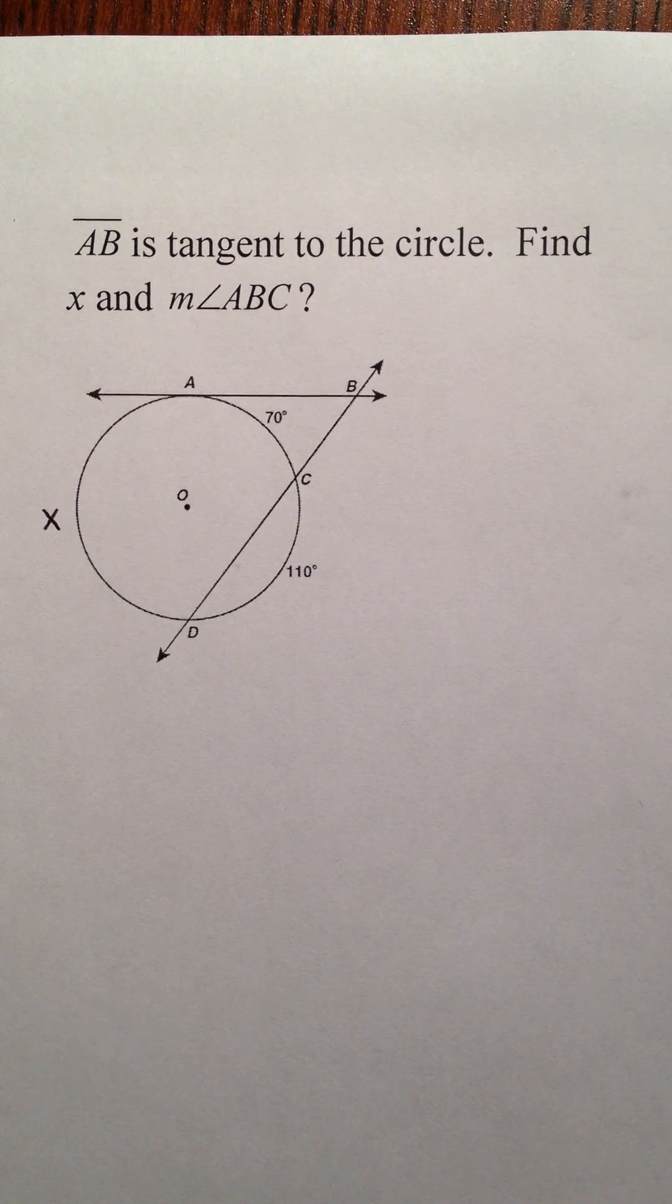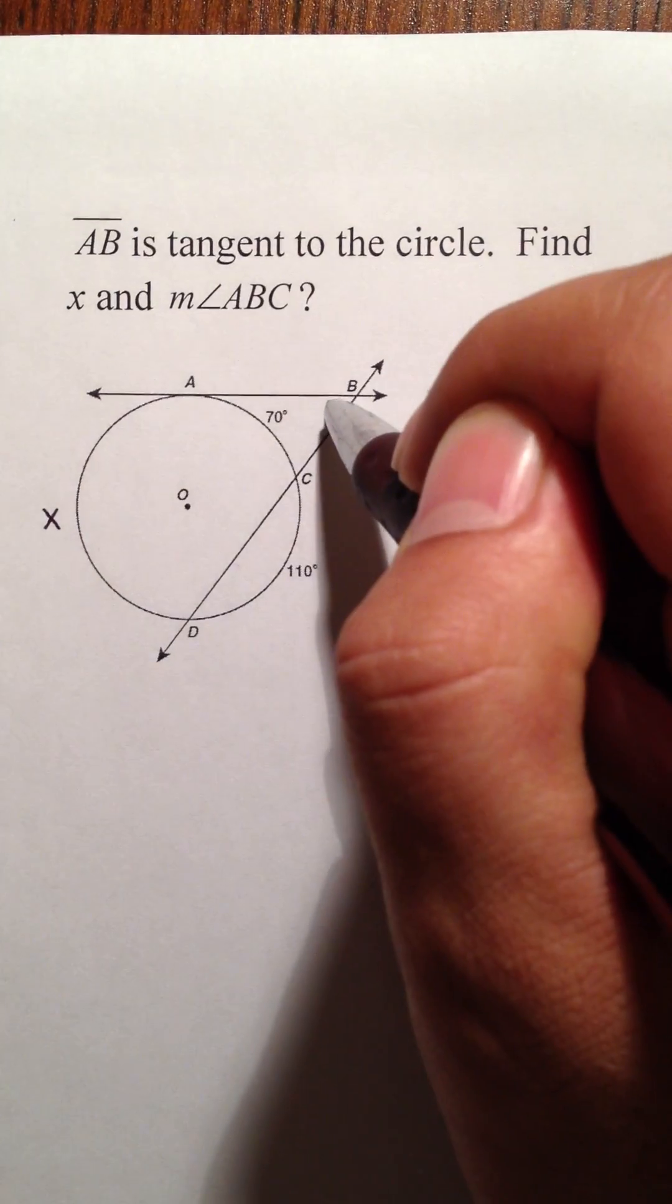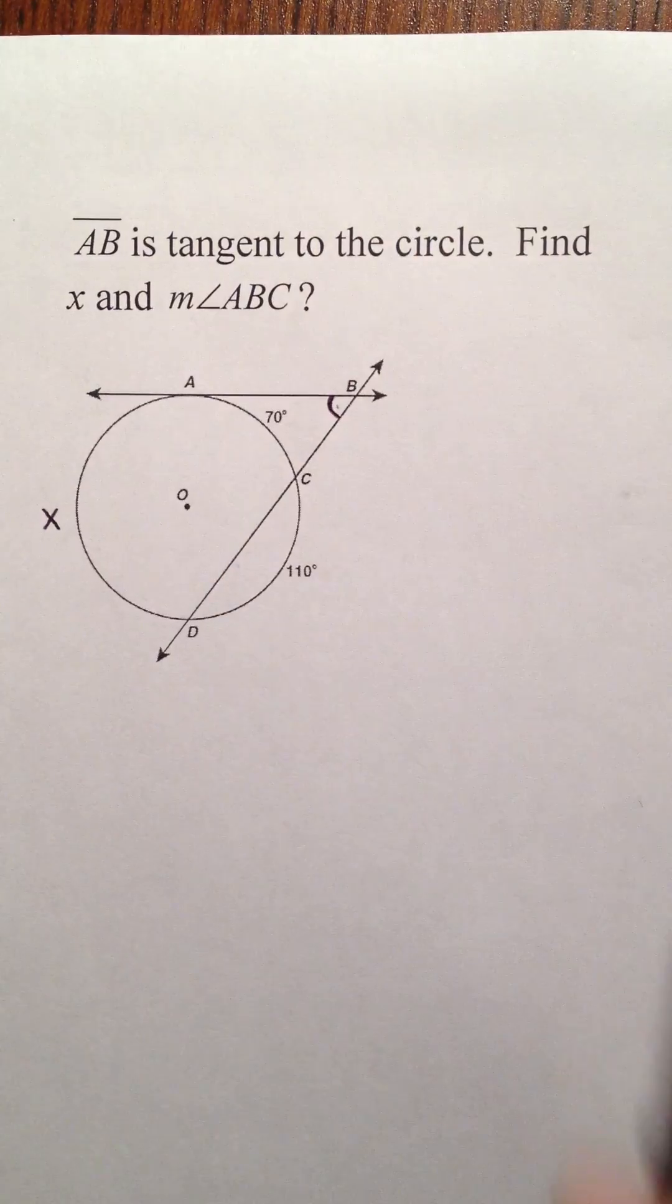Now, in this problem, we're actually being asked to find the angle ABC, which is outside the circle.